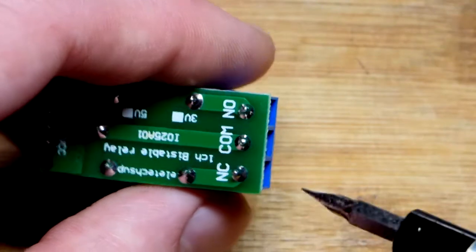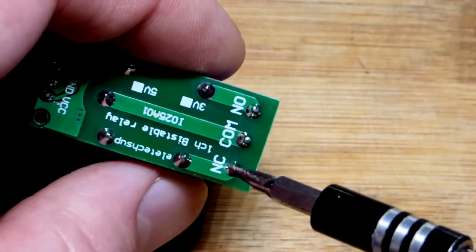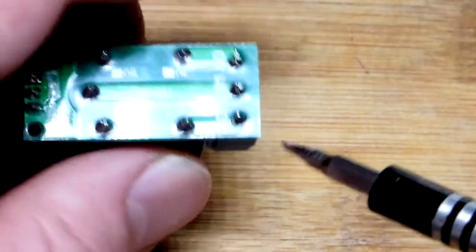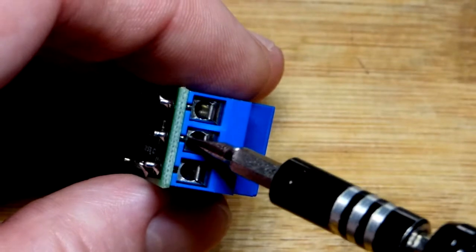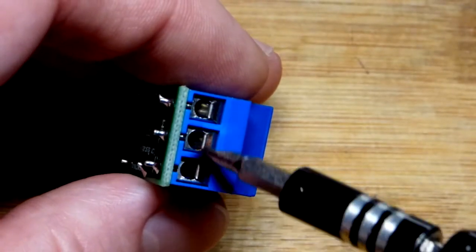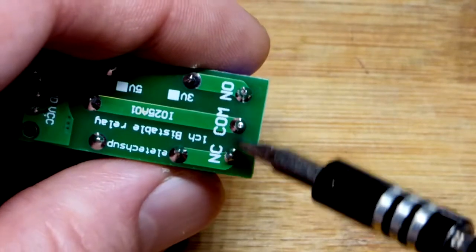We have a normally closed pin, and first off there's common. This is always connected to the mechanical switch part of it. Sometimes it's connected to that pin, sometimes to that pin with direct connection. Normally closed means when the coil is not energized, it's connected right there, those two pins directly.